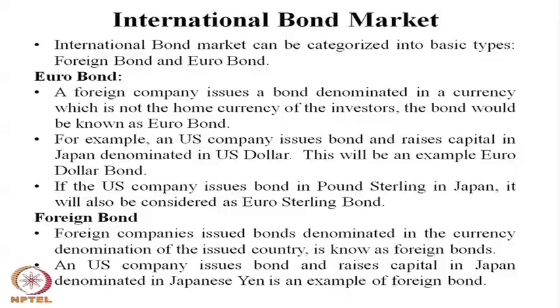The international bond market is generally categorized into two different parts. One part is called foreign bonds, and another part is called euro bonds. There are minute-level differences between euro bonds and foreign bonds. In the case of a euro bond, a foreign company issues a bond denominated in a currency which is not the home currency of the investor.